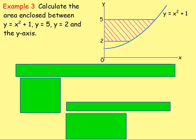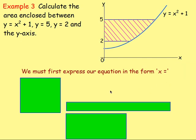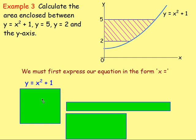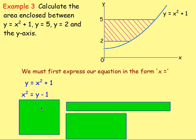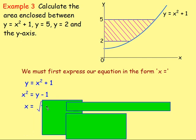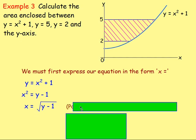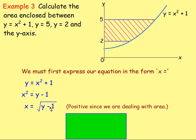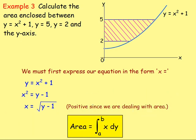Example 3: calculate the area enclosed between y equals x squared plus 1, y equals 5, y equals 2, and the y-axis. First, rearrange y equals x squared plus 1 to get x equals. Subtract 1 from both sides and take the square root, so x equals the square root of y take away 1. Normally you'd have plus or minus, but because it's an area we're dealing with, we use just the positive. Now x is written in terms of y, so using the formula, we end up integrating the square root of y take away 1 between 2 and 5, with respect to y.